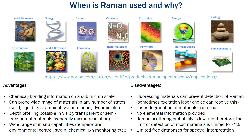Some of the disadvantages: fluorescing materials often will drown out the Raman signal, though this can sometimes be avoided by selection of the excitation laser. The laser itself can sometimes degrade the material, so you have to be careful about the power you use when doing your scans. There's no elemental information provided from this technique. Raman scattering is also a low probability light interaction, which historically was a hangup, but our ability to detect the light has improved over the years. The limit of detection for most materials is around 1%, though that can change depending on circumstances. There are also a limited number of free databases available for spectral interpretation, which can make that challenging.